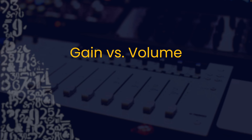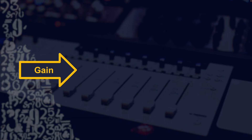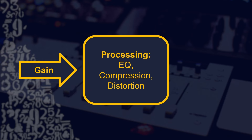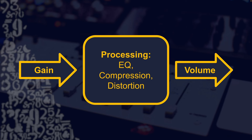Gain, at its simple functional definition, is the amount of signal going into a process — whether that's EQ, compression, distortion, your guitar amp, your preamp, anything. Gain is the signal strength going into that process. Volume is what's coming out of that process.